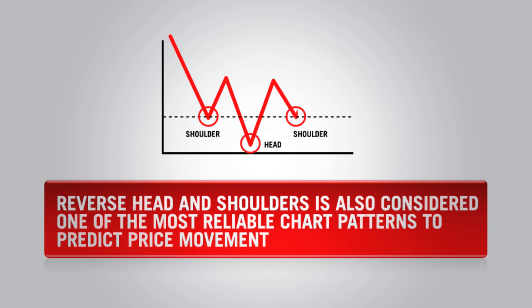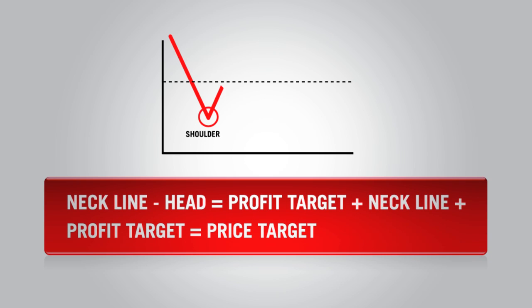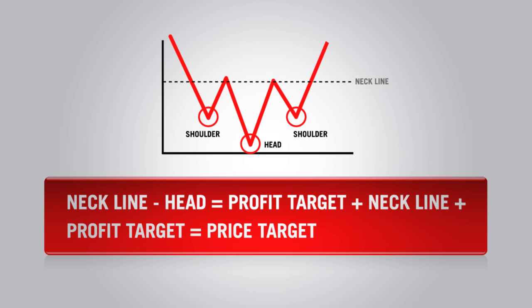Reverse head and shoulders is also considered one of the most reliable chart patterns to predict price movement. To calculate a profit target, you need to draw a line between the bottoms of the two shoulders, which is called a neckline. You then subtract the head point from the neckline, and that equals the amount of pips for the profit target. This number is then added to the neckline to get your price target.